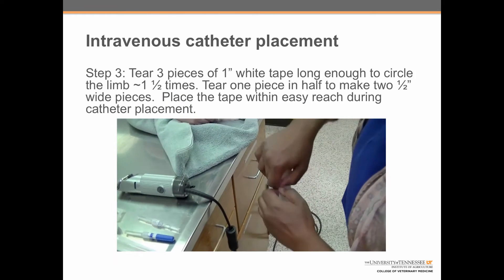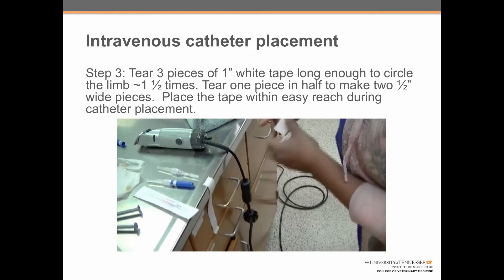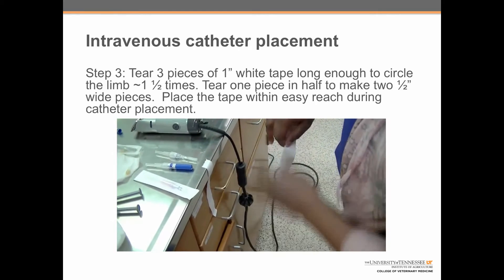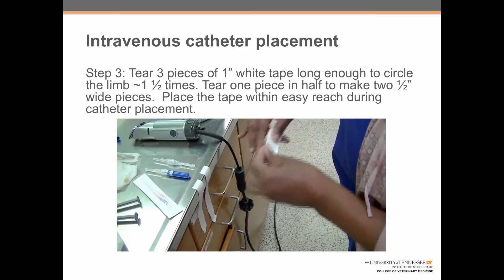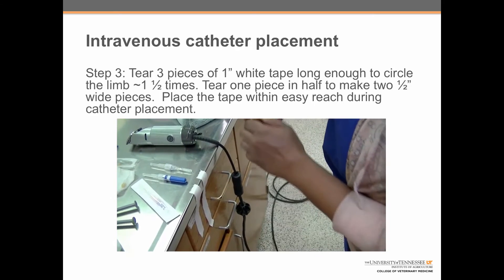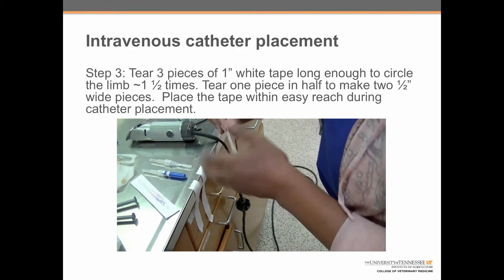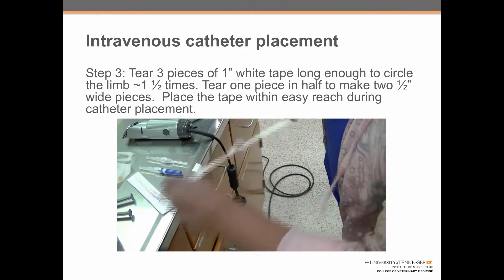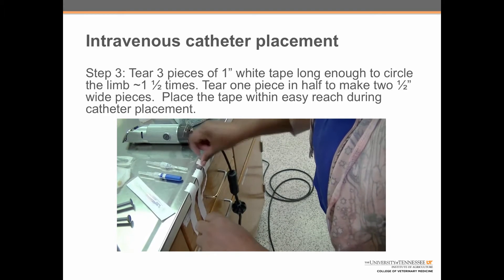Step 3: tear three pieces of one-inch white tape long enough to circle the limb one-and-a-half times. Tear one piece in half to make two half-inch wide pieces. Place the tape within easy reach during catheter placement.